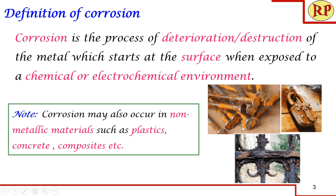You see that nails are being rusted, locks are rusted, gates are rusted — in our day-to-day life we are seeing it. So rust is one form of corrosion but it is not the only type of corrosion. Another important thing to note is that corrosion not only occurs in metals; it also occurs in non-metallic materials such as plastics, concretes, and composites. But in this session we are going to look into only metals.